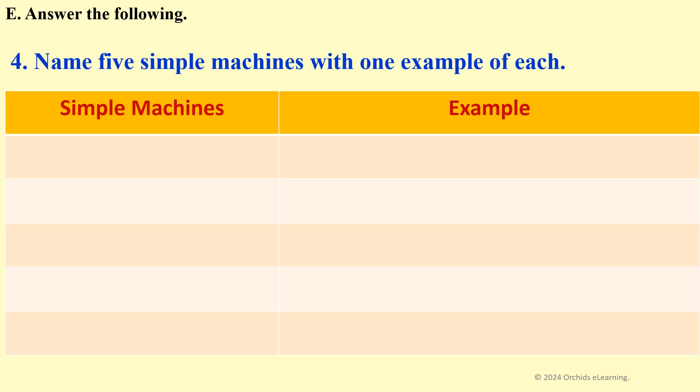Name five simple machines with one example of each. Lever: A seesaw in a playground. Pulley: A flagpole used to raise and lower a flag.